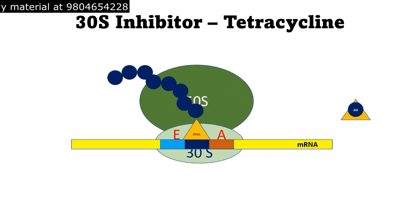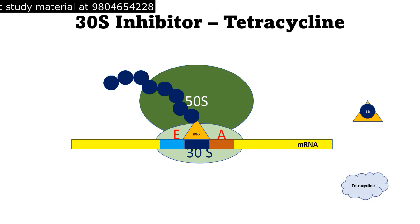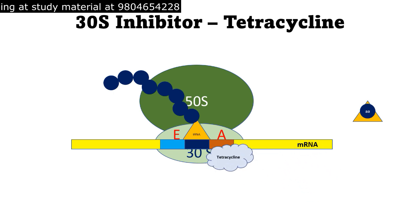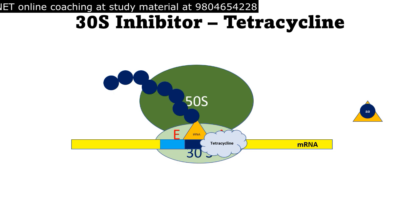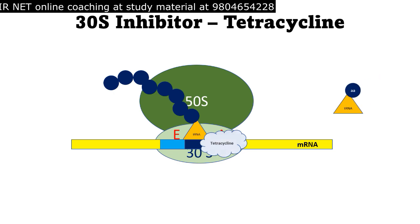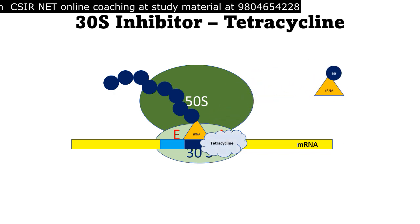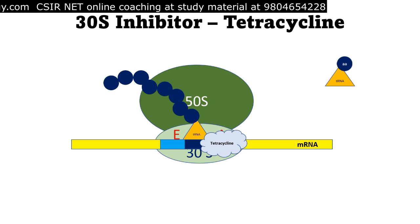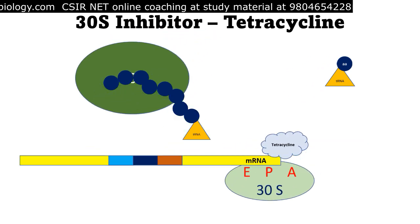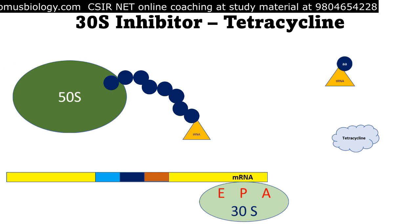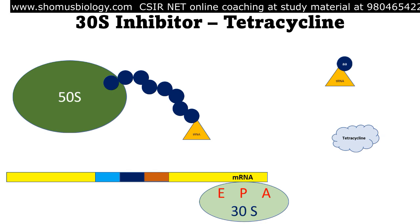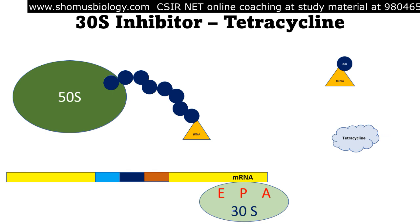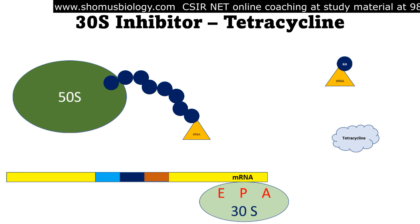When tetracycline antibiotic is present, it interacts with and blocks the A site of the 30s ribosomal subunit. This prevents charged tRNA from bringing new amino acids to the A site, resulting in protein synthesis inhibition and dissociation of components, causing cells to stop growing. That's why these antibiotics are bacteriostatic, and bactericidal only at high dosage over a longer duration.